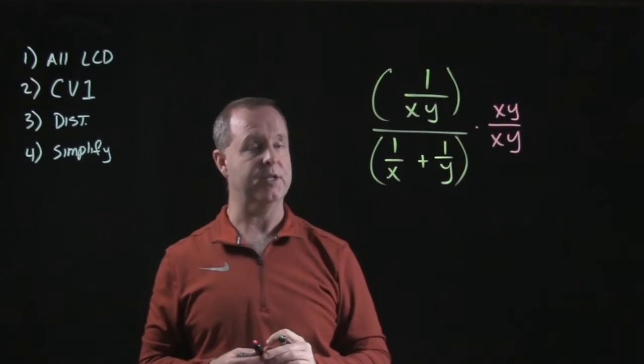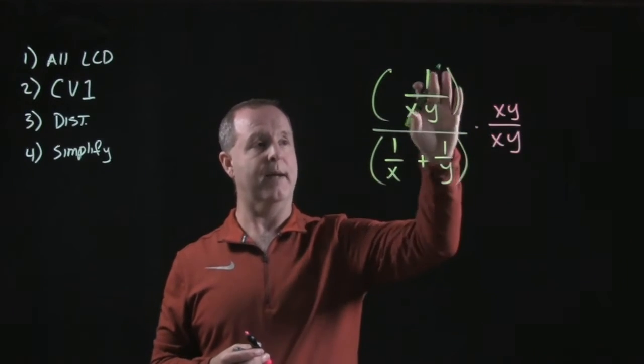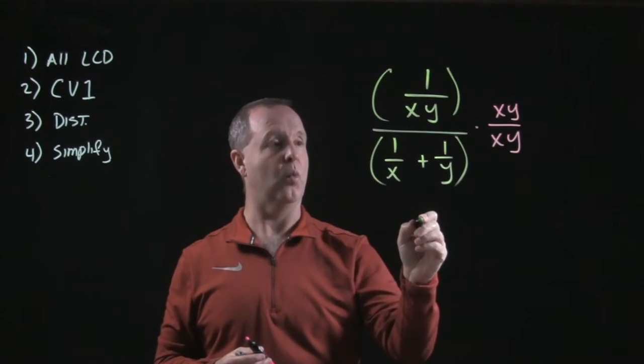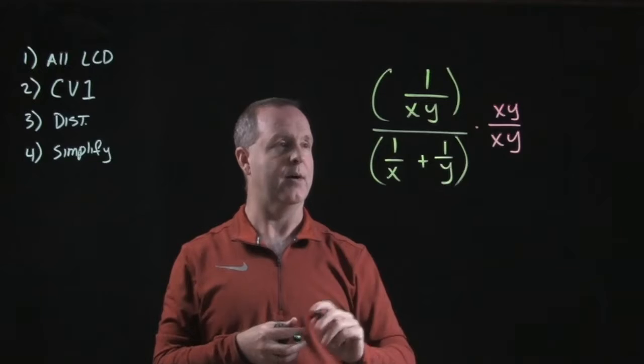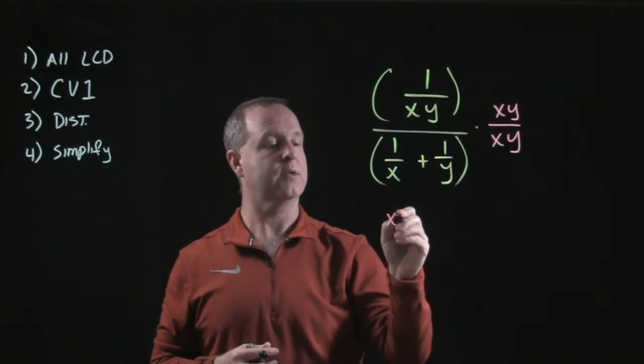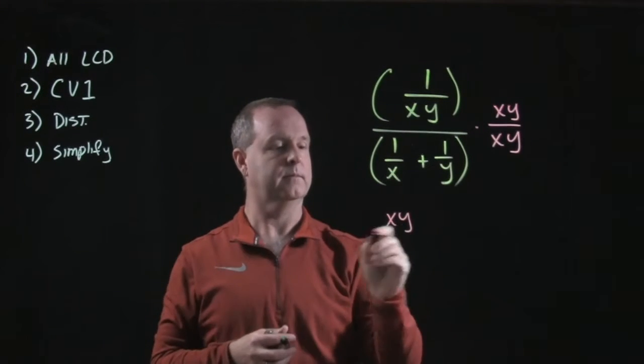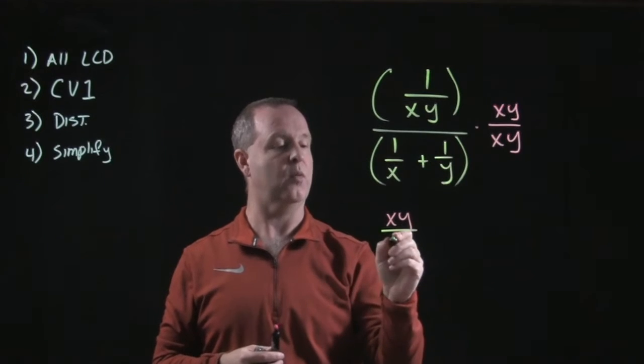xy times my first fraction in my numerator, xy times one over xy, just produces a one. Well, it produces xy over xy. We'll go ahead and do that. And xy over xy.